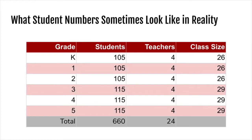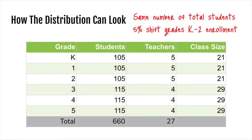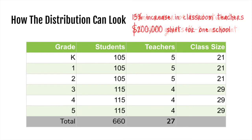You'll notice that class sizes change. It puts kindergarten, first, and second grades over their class maximum of 25. So to address that, we now have to open a new section in each of the younger three grades. Notice that the total enrollment for the school doesn't even change — the 5% shift in enrollment happens between grade levels in the same school. But even though total enrollment stays the same, we have a 13% increase in classroom teachers needed for the school.